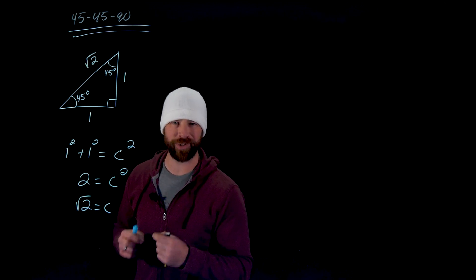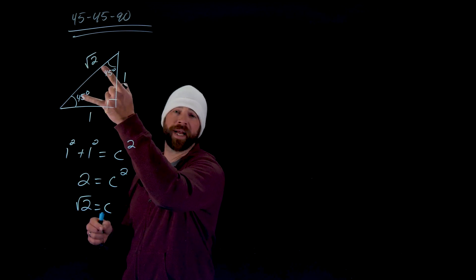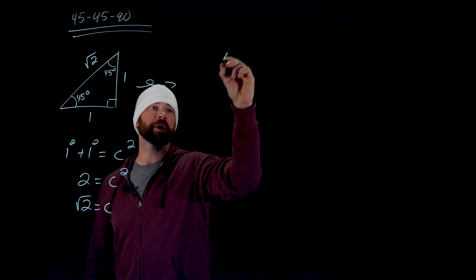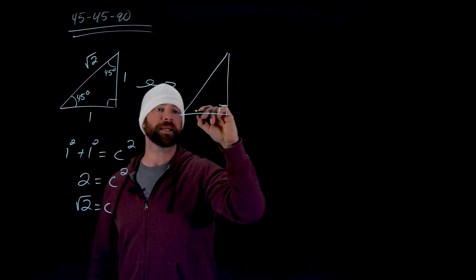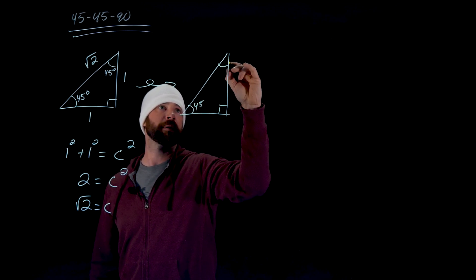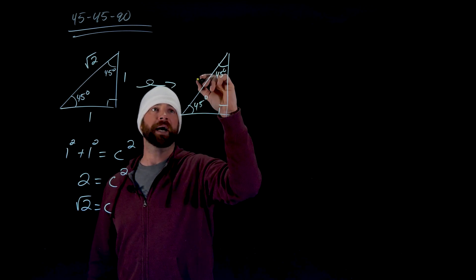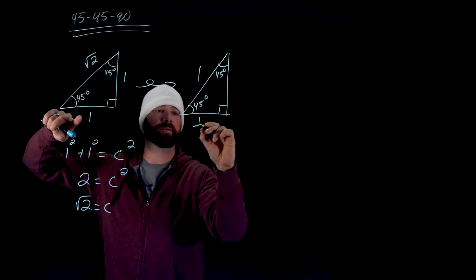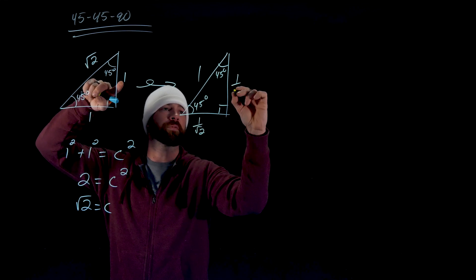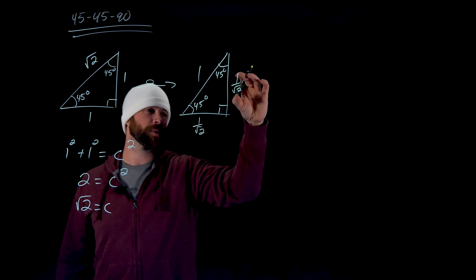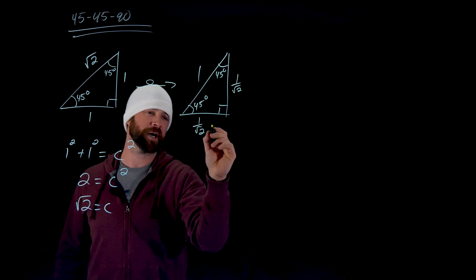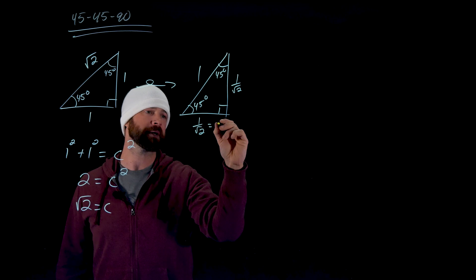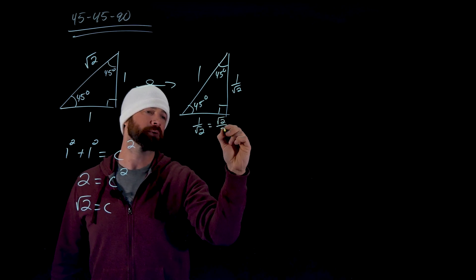What we're going to want to use is the triangle with a hypotenuse of 1. Dividing each side by √2 gives legs of 1/√2 each. Since we don't like radicals in the denominator, we multiply numerator and denominator by √2 to rationalize it — giving us √2 over 2. So the 45-45-90 triangle with hypotenuse 1 has legs of √2/2.